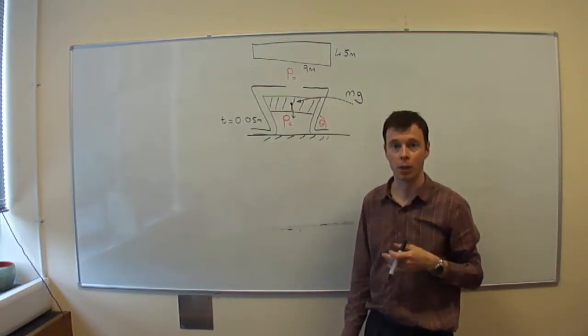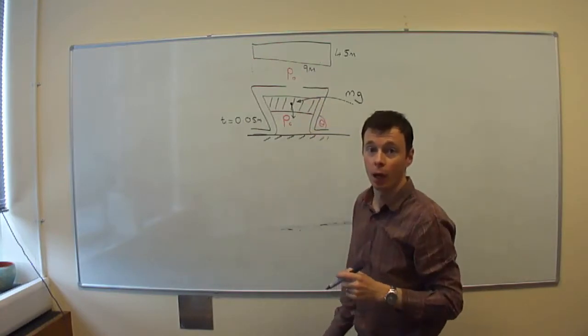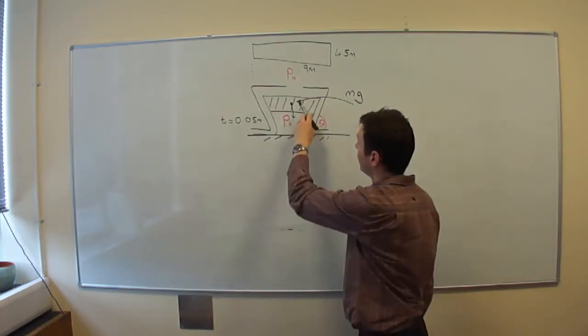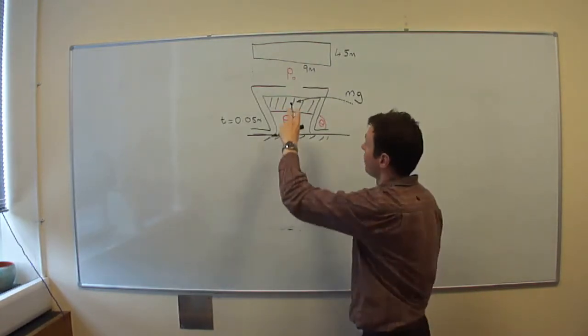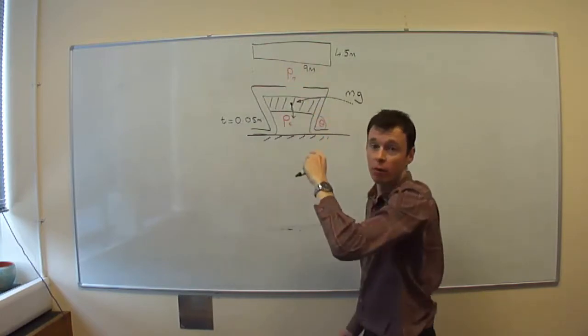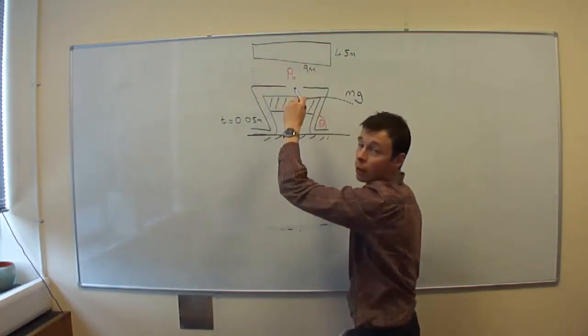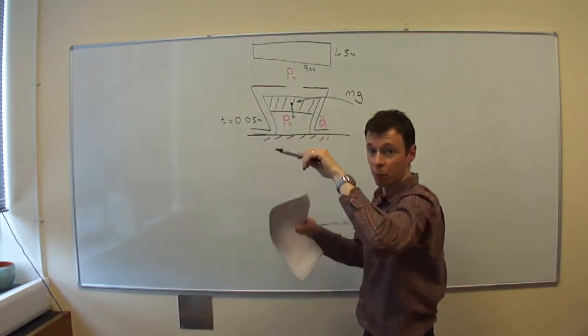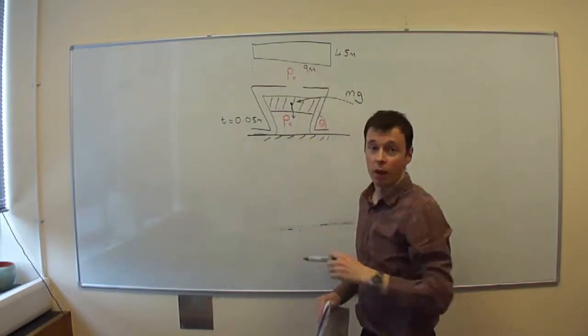We now need to conduct a force balance on this problem. And you can see that we've got mg acting vertically downwards. That has to be balanced by this pressure difference multiplied by the area of the hovercraft deck, assuming that the area is being pushed down around the perimeter of this area.